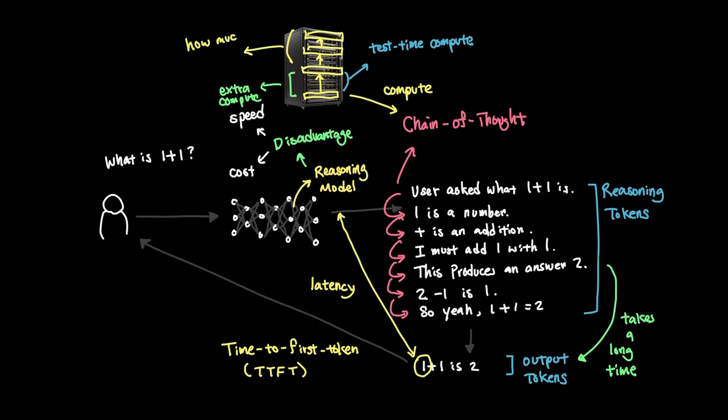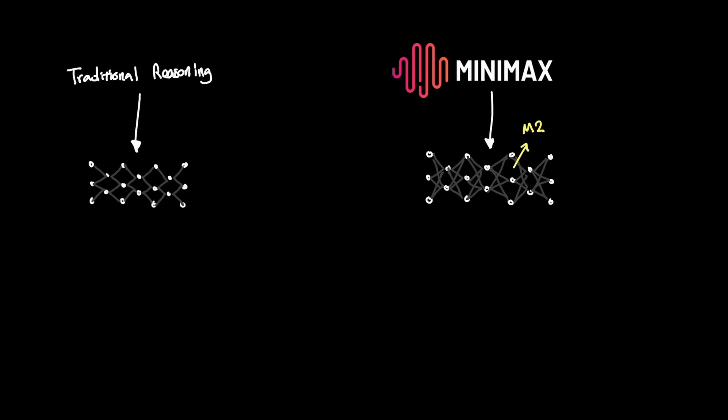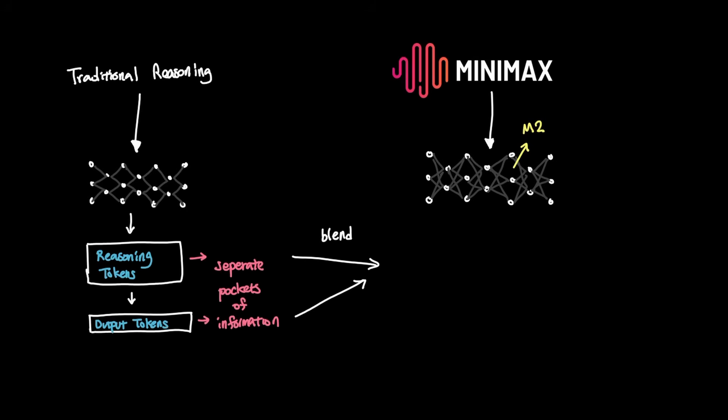Also, knowing how much compute to dedicate can somewhat be arbitrary since the complexity of reasoning can vary from prompt to prompt. Minimax M2 uses a different method. And the idea behind it is pretty simple in theory. Instead of treating reasoning model and output as separate pockets of information, Minimax blended them together by practically interleaving thought tokens and actual text tokens.